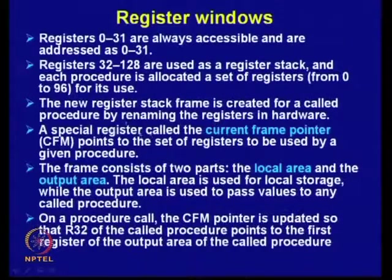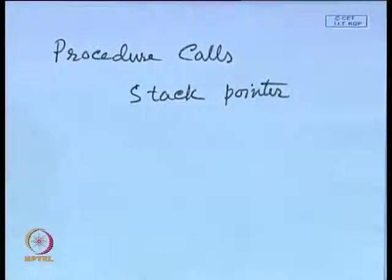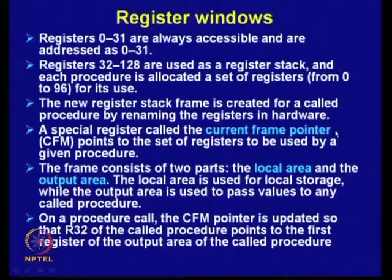When context switching occurs, storing and restoring the processor status through memory is time consuming. Instead, it is done here with the help of registers. A special register called the Current Frame Pointer (CFM) points to the set of registers to be used by a given procedure.